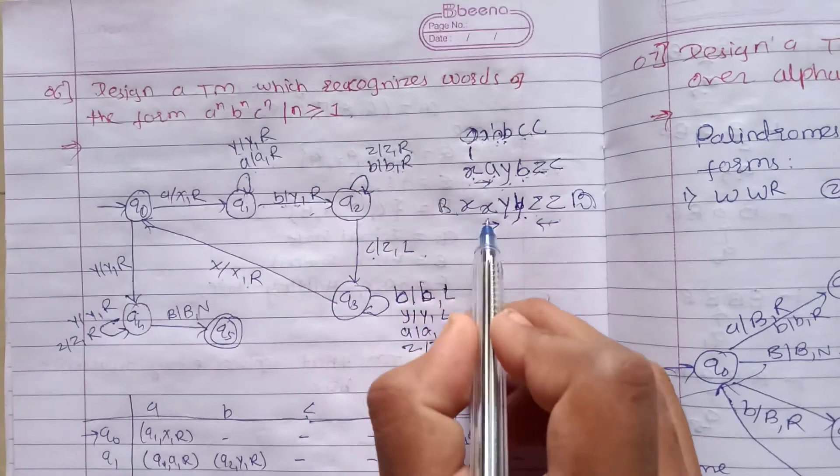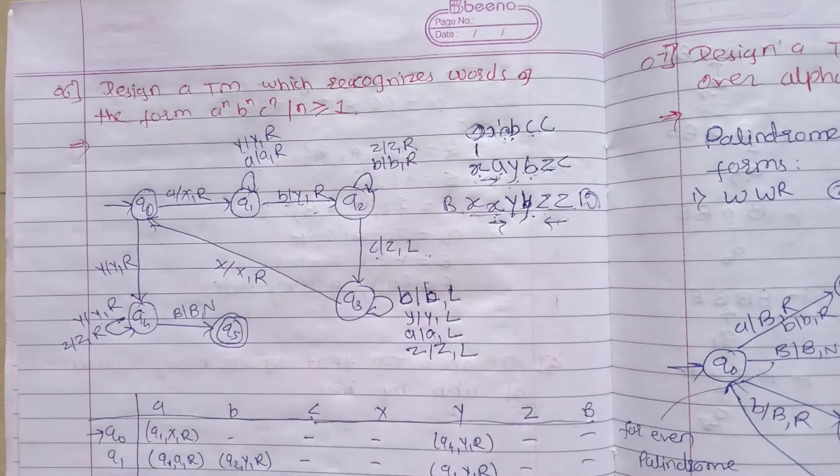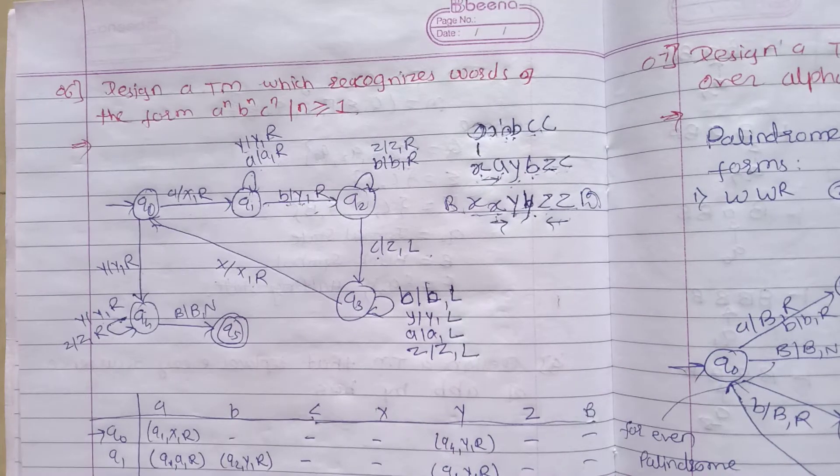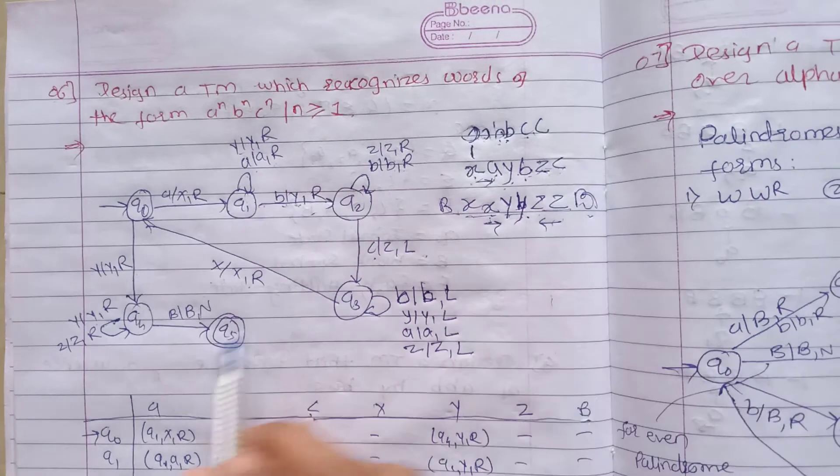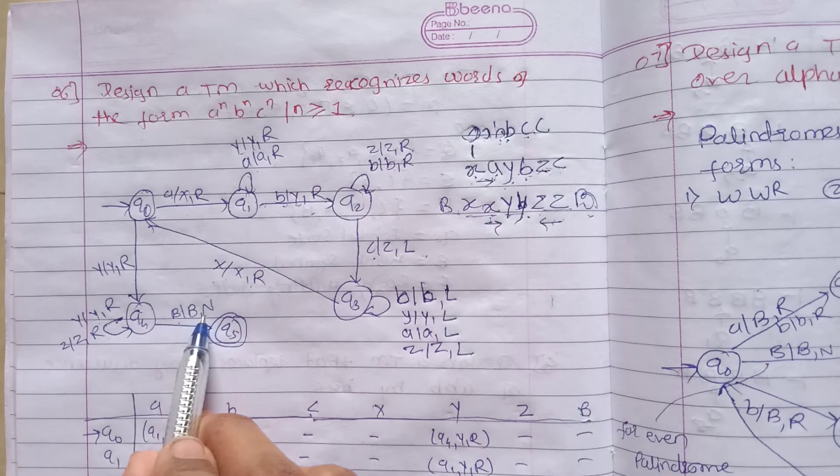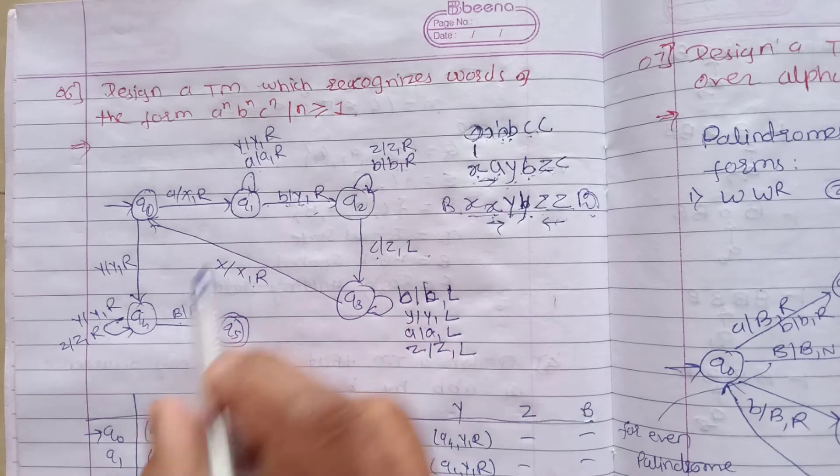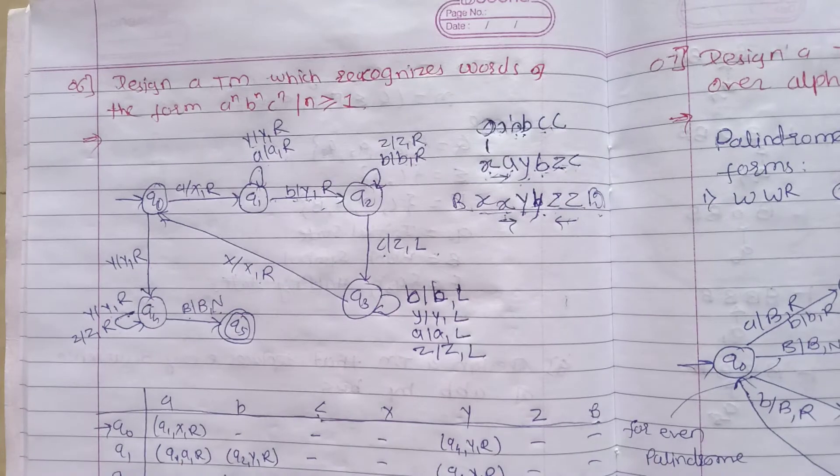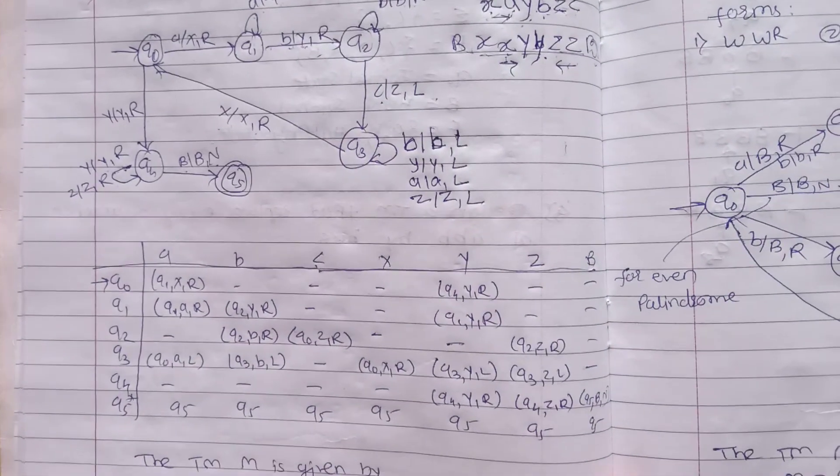What is the meaning of this? The number of a's has been processed, but we have to check if the number of b's and c's are also processed. That's why we have this loop. When we reach blank, if blank is encountered, it means all symbols have matched. So blank is replaced with blank and there is no movement.